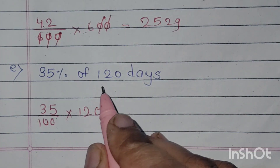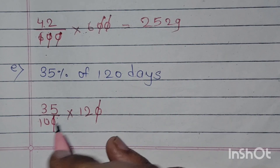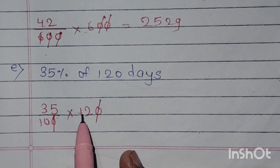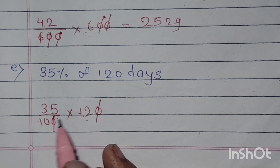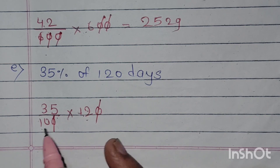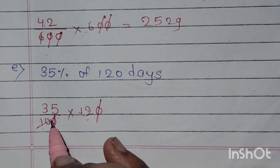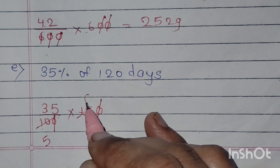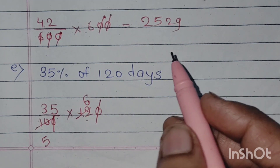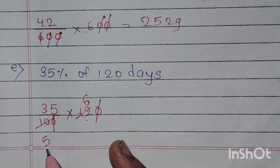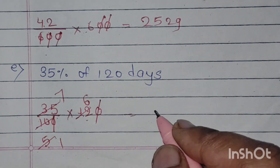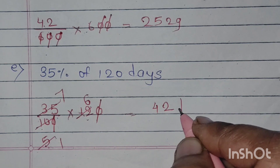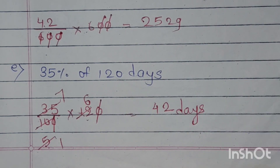35% of 120 days: the zeros get cancelled. अभी यहाँ पे देखो — पहले multiply मत करो क्योंकि 35 और 12 को multiply करने में time लगेगा। लेकिन आपको पता है कि 12 और 10, 2 के table में आते हैं, तो 2 से पहले divide करो: 2 और 5 जाके 10 हो जाएगा, और 2 और 6 जाके 12 हो जाएगा। अभी यह भी देखो — 35 और 5, 5 के table में आते हैं: 5 into 7 is 35. तो 7 into 6 is 42 days.